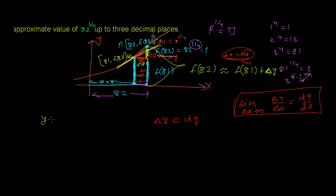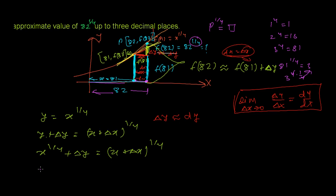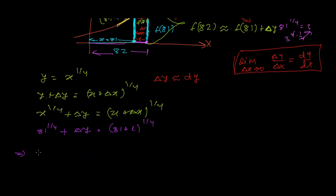If you didn't follow the graphical method, here's an algebraic approach. Let y = x^(1/4). Making a small increment: y + Δy = (x + Δx)^(1/4). Since y = x^(1/4), substituting x = 81 and Δx = 1, we get: 81^(1/4) + Δy = (81 + 1)^(1/4) = 82^(1/4).